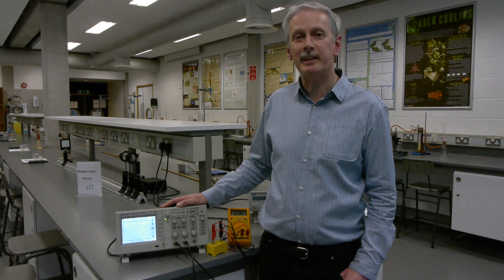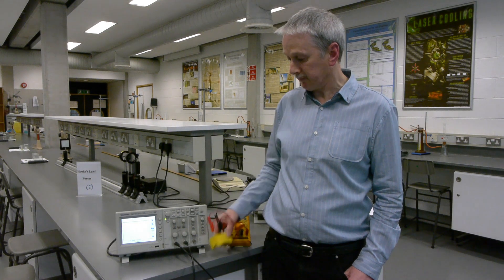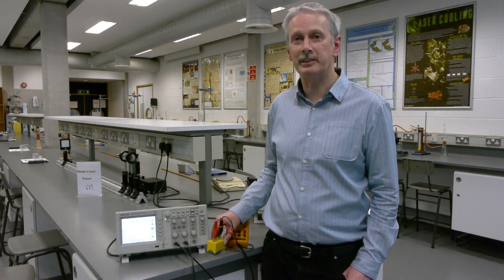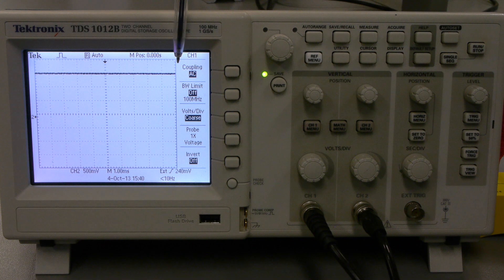Now, let's look at a bit more detail at setting up the vertical scale. To make it simple, I'm just using a battery here, which gives a straight DC voltage. Now as you can see, the oscilloscope displays the battery voltage as a single straight line. That's because the voltage does not change with time.